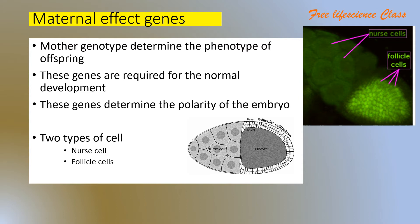Let's start our class about maternal effect genes. As we saw in part 1, maternal effect genes are genes coming from the mother's genome that determine the phenotype of the offspring. In short, the mother's genotype determines the phenotype of the offspring. These genes are basically needed for the early stages of embryo development, and a normal development of an embryo requires these genes.